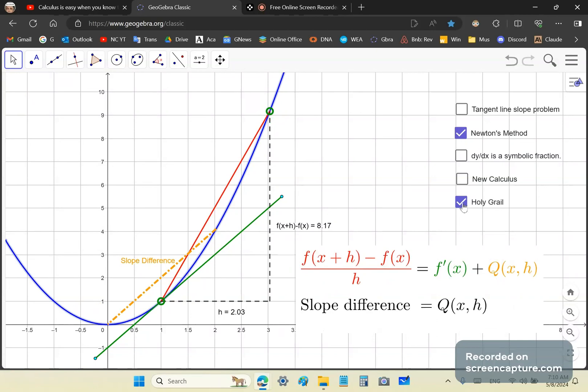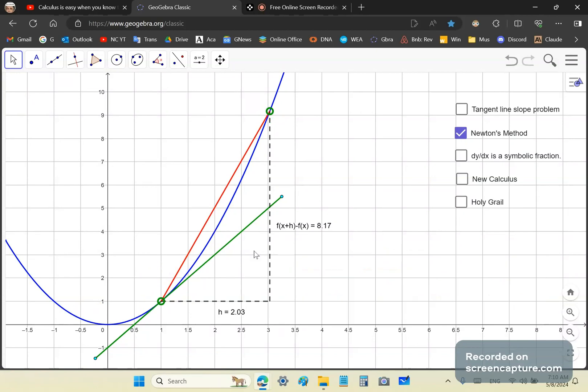The h is actually this Q(x,h) term. It's the slope difference. That's what the h is. That's all explained in the holy grail and it shows you how to rigorize your mainstream calculus without the bullshit of limit theory.